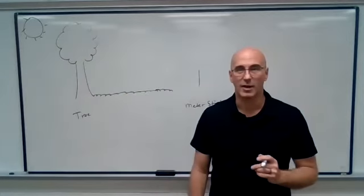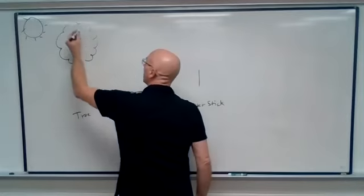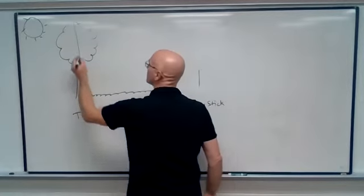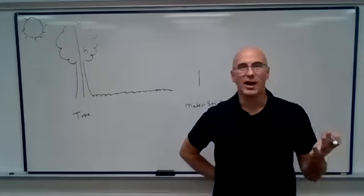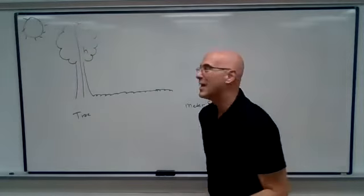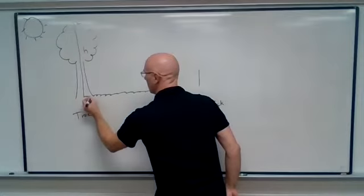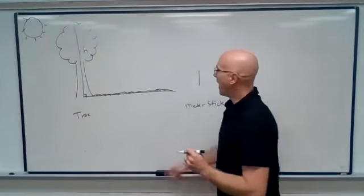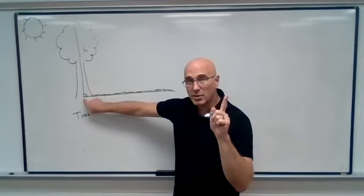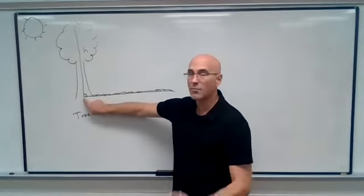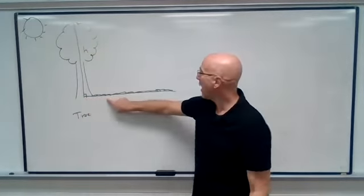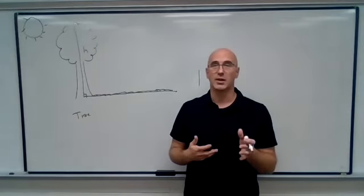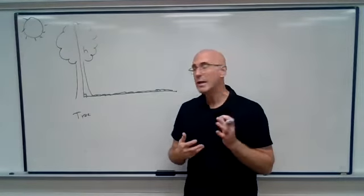That's a long shadow on the ground. So what we can do is if we want to find the height of this tree, let's just call it H for height. We're going to be really creative there. What this is doing, if you look here, we see that we can measure because it's possible to stand right at the bottom of the tree and have a tape measure and measure how long that shadow is.